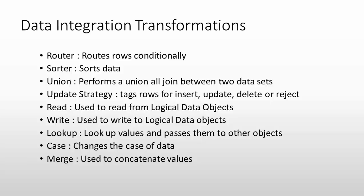The sorter, as the name suggests, is used for sorting the data — for example, sorting by employee ID or alphanumerically by first name or full name. The union transformation combines two outputs into a single result, performing a union-all join between two datasets. Update strategy tags the row for update, insert, delete, or reject operations.